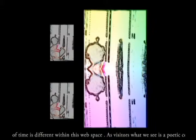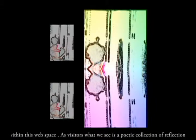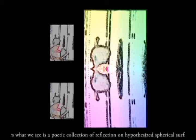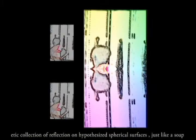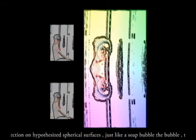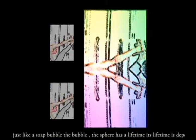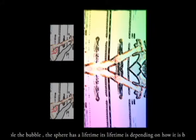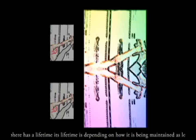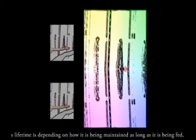And also, all reflection is changeable. So the reflection which was here today, the quality of the reflection, the beauty of the colors, tomorrow is different and tomorrow can be one minute later. So perception of time is different within this web space.